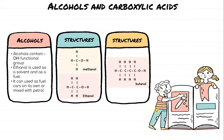Let's look into alcohol and carboxylic acids. Alcohol contains OH as its functional group. Ethanol is used as a solvent and as a fuel — it can be used as a fuel on its own or mixed with petrol. Methanol consists of one carbon linked to OH and surrounded by 3 hydrogens. Ethanol consists of 2 carbons linked to OH with 6 hydrogens, and butanol has 4 carbons, one OH, and is surrounded by hydrogens.